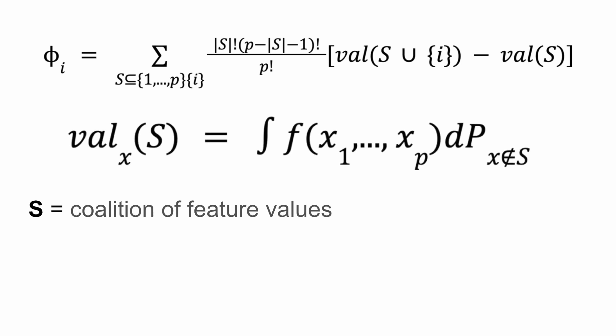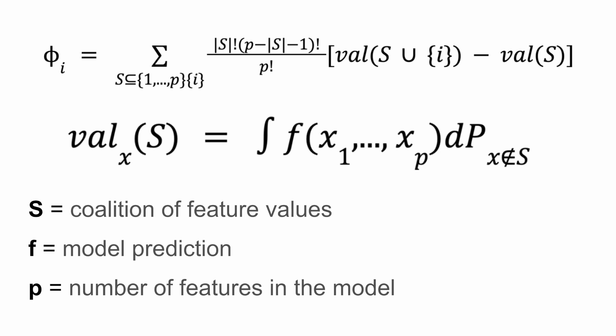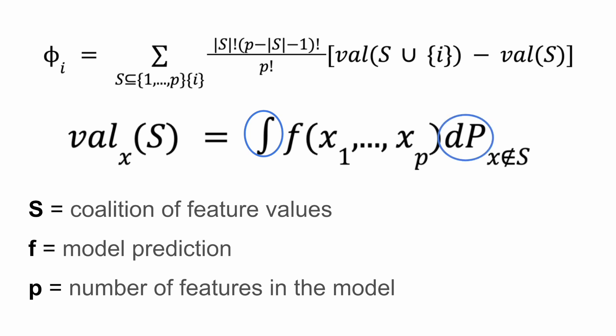We also need to change the value function. We are no longer talking about the value of a game, but the value predicted by a model. So F is our model prediction, and the model has P features. The value of a coalition of features S is the model's prediction marginalized over all the features that are not in S. For the features that are in S, we use the actual values. We are doing multiple integration — to marginalize over a feature, we integrate with respect to the probability of the feature's values, for all features not in S. To do this, we need to know the feature distributions or use the empirical distributions.